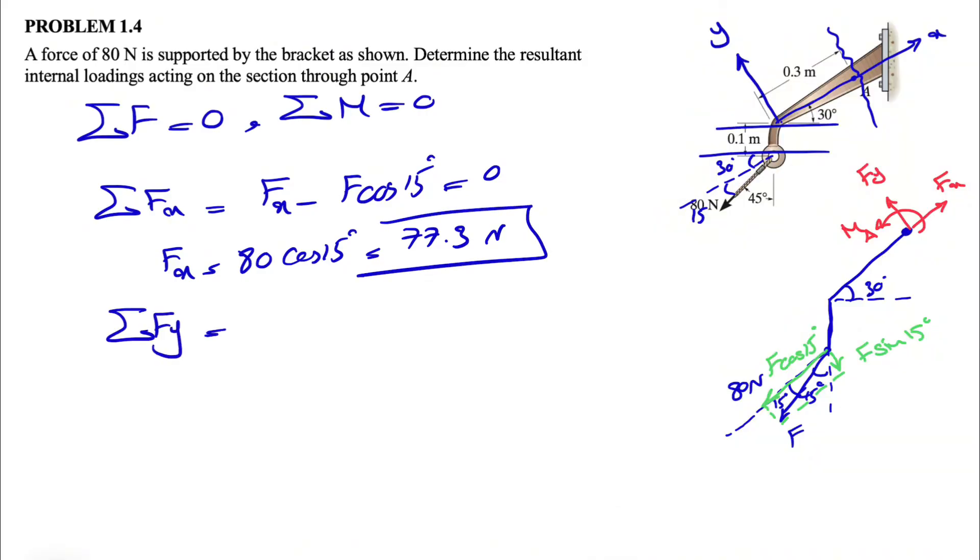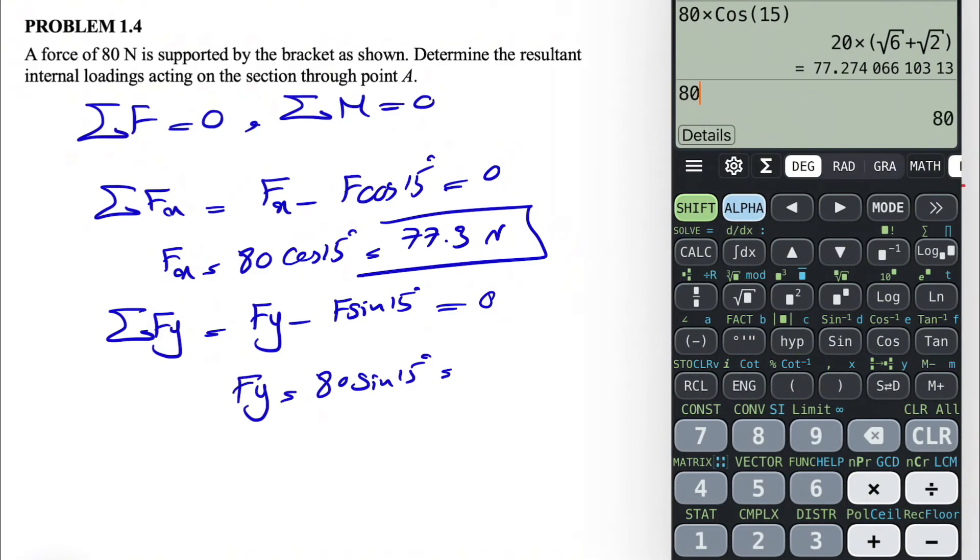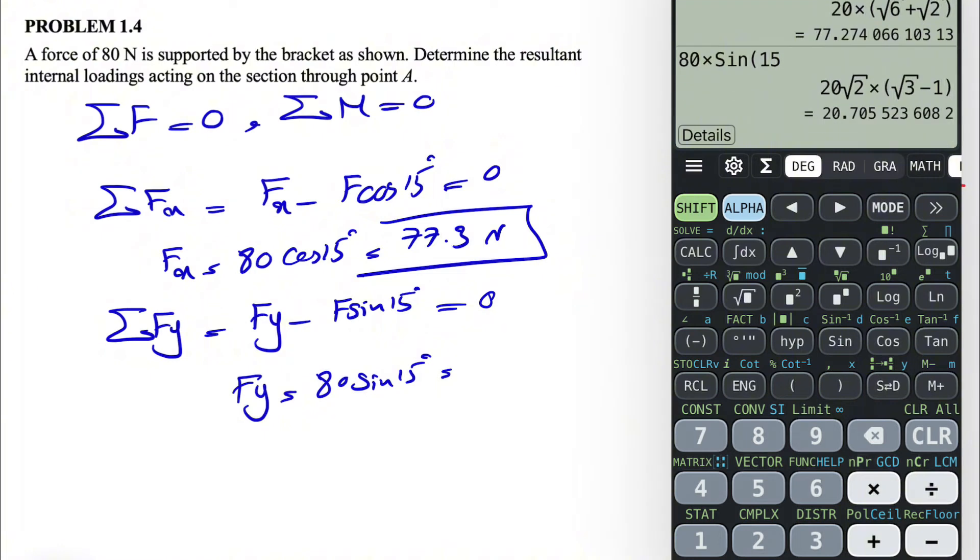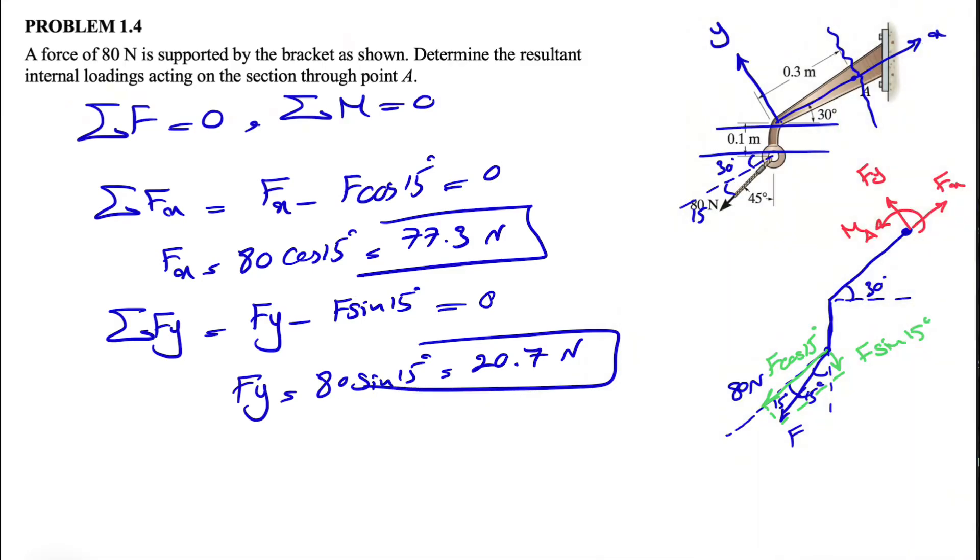We go with our Fy. We have Fy minus F sine of 15 degrees since it's downward, so it will be in the opposite direction of our Fy equal to zero. Fy here will be 80 sine of 15 degrees, which is 20.7 Newton.